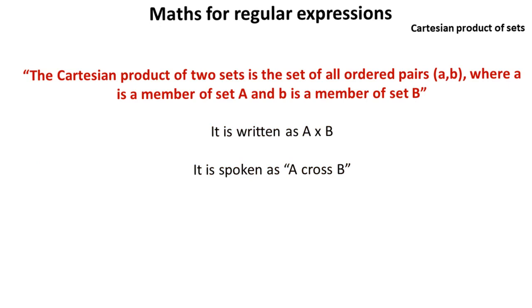We've also got to look at the Cartesian product of two sets. And this is simply the set of all ordered pairs, A and B, where A is a member of set A, and B is a member of set B. We write it like this, A times B, and we speak it saying A cross B.